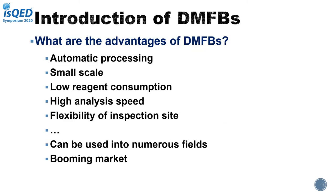There are some outstanding advantages of DMFBs, such as automatic processing, small scale, low reagent consumption, high analysis speed, flexibility of inspection site, and it can be used in numerous fields. Illumina is the leading DNA sequencing company and has announced the use of DMFB in their new NGS library product. USDA has developed the BabySeeker DMFB platform to track newborn babies for disease. We can see DMFB will have a booming market.